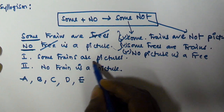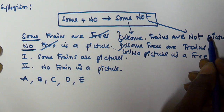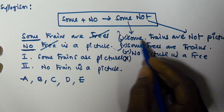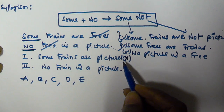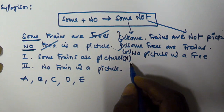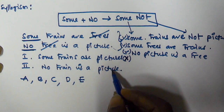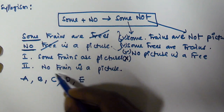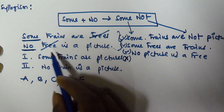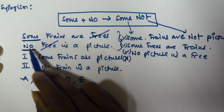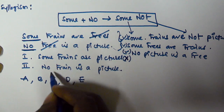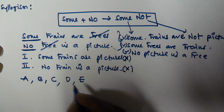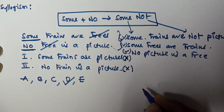Now comparing what we derived with the given conclusions. The first given conclusion is 'some trains are pictures,' but we derived 'some trains are not pictures' — these are opposites, so conclusion one is false. The second given conclusion is 'no train is a picture,' but we only derived a connection between tree and picture using 'no,' not between train and picture, so conclusion two is also false.